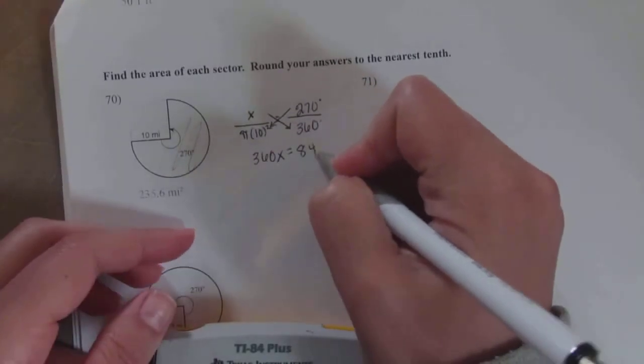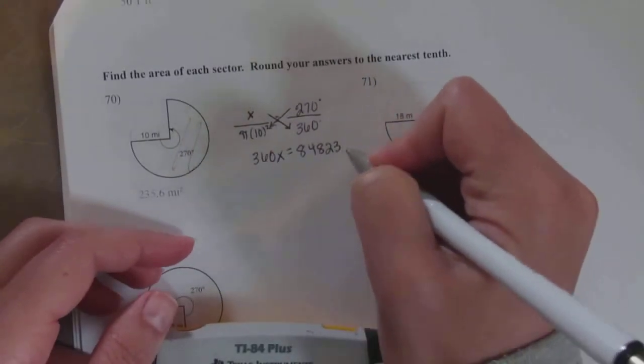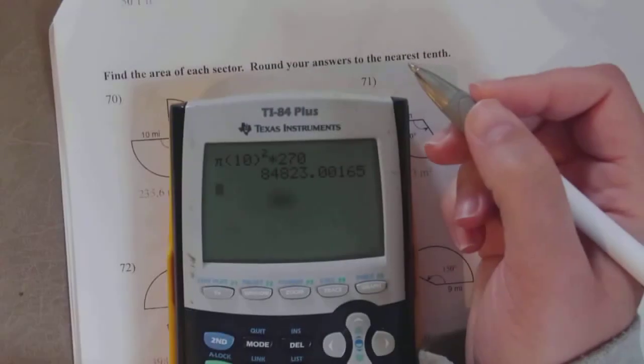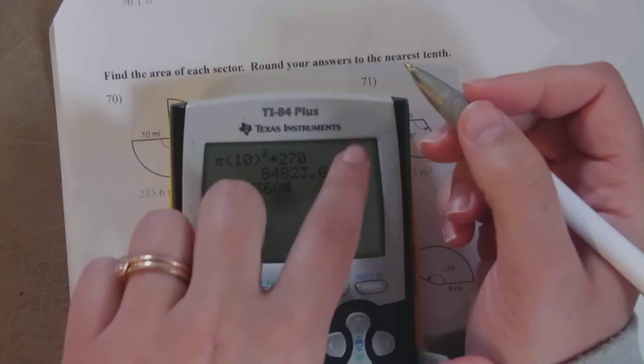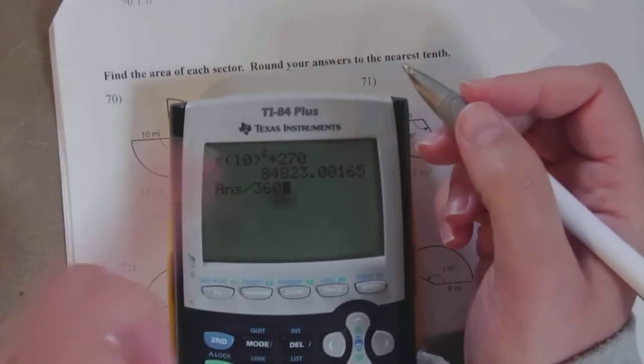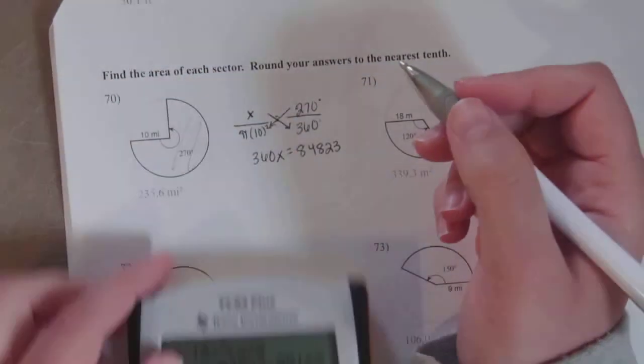If I was doing this problem, I wouldn't even write that number down. I would just go immediately to divided by 360. If I just put in my next operation, the calculator automatically brings down that answer.